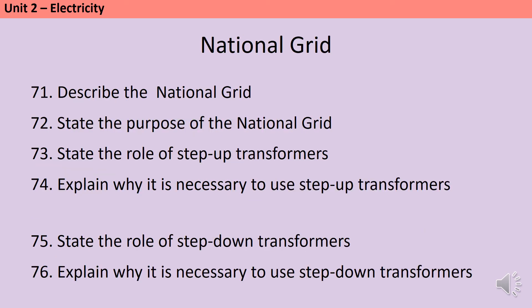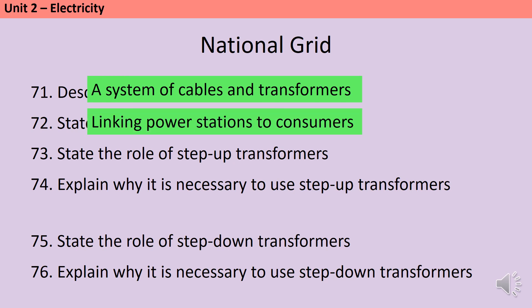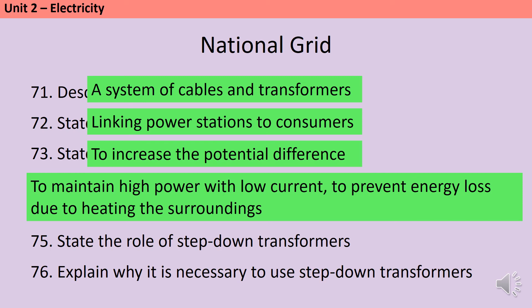The national grid is a system of cables and transformers designed to link power stations to electrical consumers. The step-up transformers are used to increase the potential difference. The reason for this is that we need the power to be at a fixed level based on how much electricity consumers need. Power has two components: potential difference and current. So if potential difference is high, then current can be low, and we want the current to be low because the higher the current is, the more the wires will heat up, and that would lead to the loss of energy because the atmosphere is being heated. So using a step-up transformer, we can increase the potential difference, thereby lower the current, and thereby minimize energy losses. The step-down transformers are then there to decrease the potential difference to a safe level for the consumers.